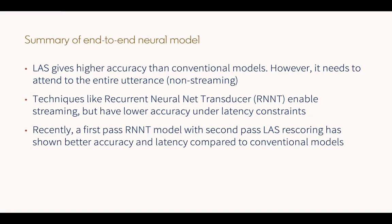These models give better accuracy than conventional models, but they are non-streaming because they use a bidirectional LSTM on the encoder side. More recently, techniques like recurrent neural network transducers — RNNTs — enable streaming because they do not use bidirectional LSTMs, though they are not as accurate. Google published a paper combining RNNTs in a first pass to produce hypotheses that are rescored by a LAS model in the second pass. This combined model is an end-to-end speech recognition system with attention that is more accurate and better in latency compared to conventional hybrid HMM neural network systems.